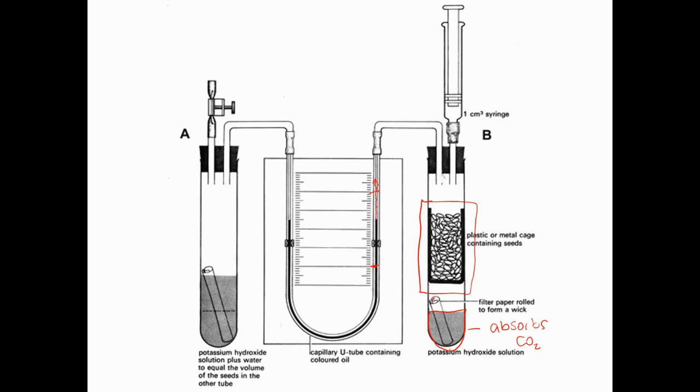And you'll notice that there's a filter paper wick in here. And the purpose of the filter paper wick is just to increase the surface area of the potassium hydroxide so that the carbon dioxide can be absorbed as fast as possible. So it doesn't cause changes to the volume inside this sealed container.